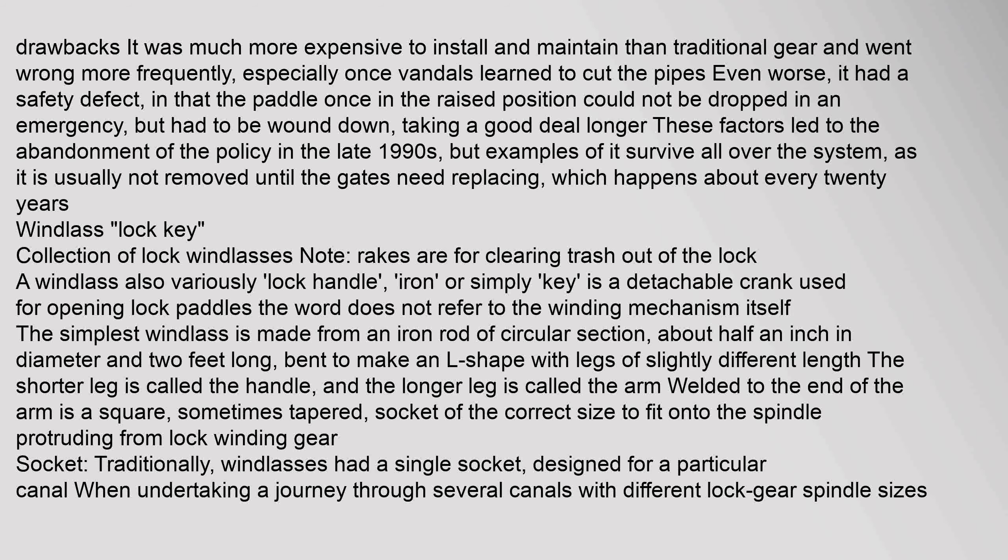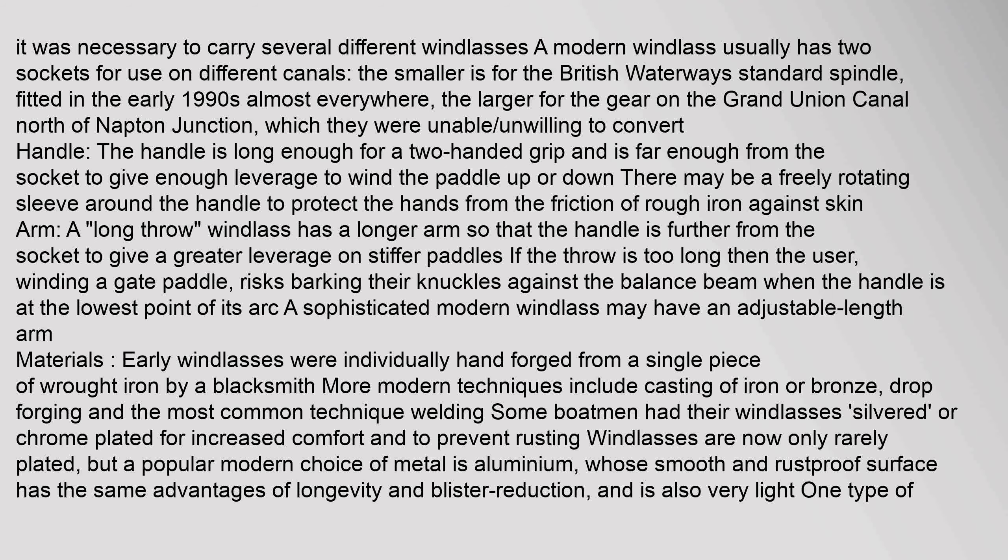A windlass — also called a lock handle, iron, or simply a key — is a detachable crank used for opening lock paddles. The simplest windlass is made from an iron rod about half an inch in diameter and two feet long, bent into an L shape. The shorter leg is the handle and the longer leg is the arm; welded to the end of the arm is a square, sometimes tapered, socket of the correct size to fit onto the spindle of the lock winding gear. Traditionally windlasses had a single socket designed for a particular canal, requiring boaters to carry several different windlasses when traveling through canals with different spindle sizes.